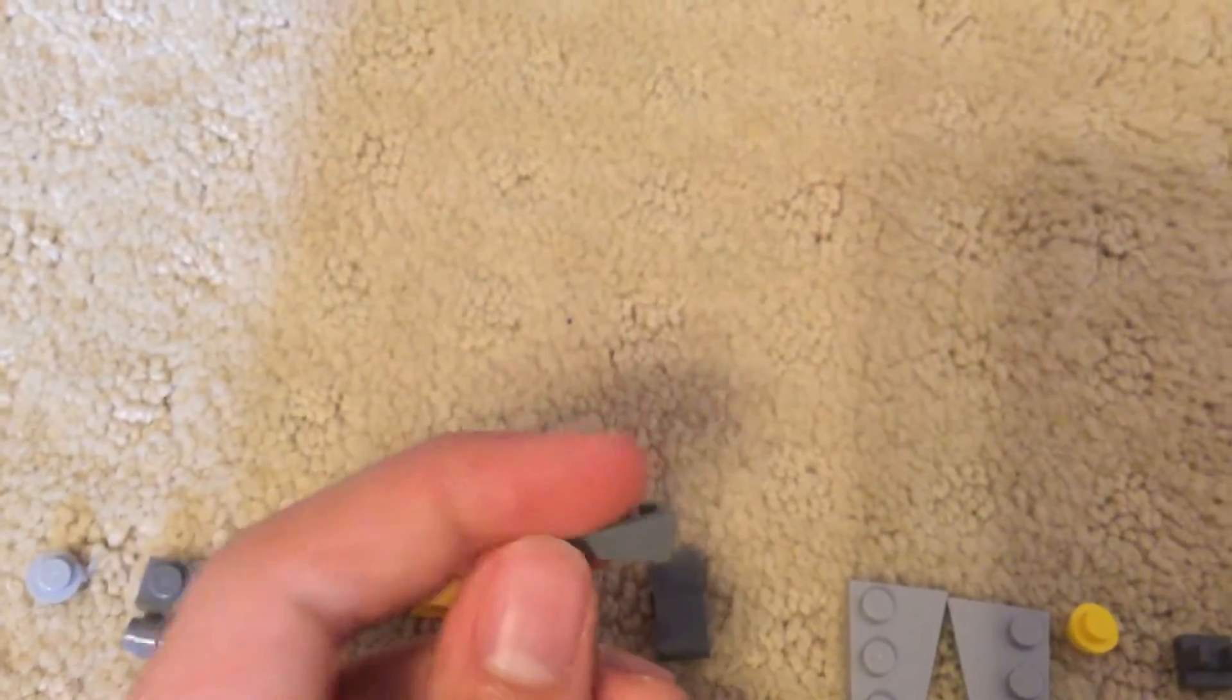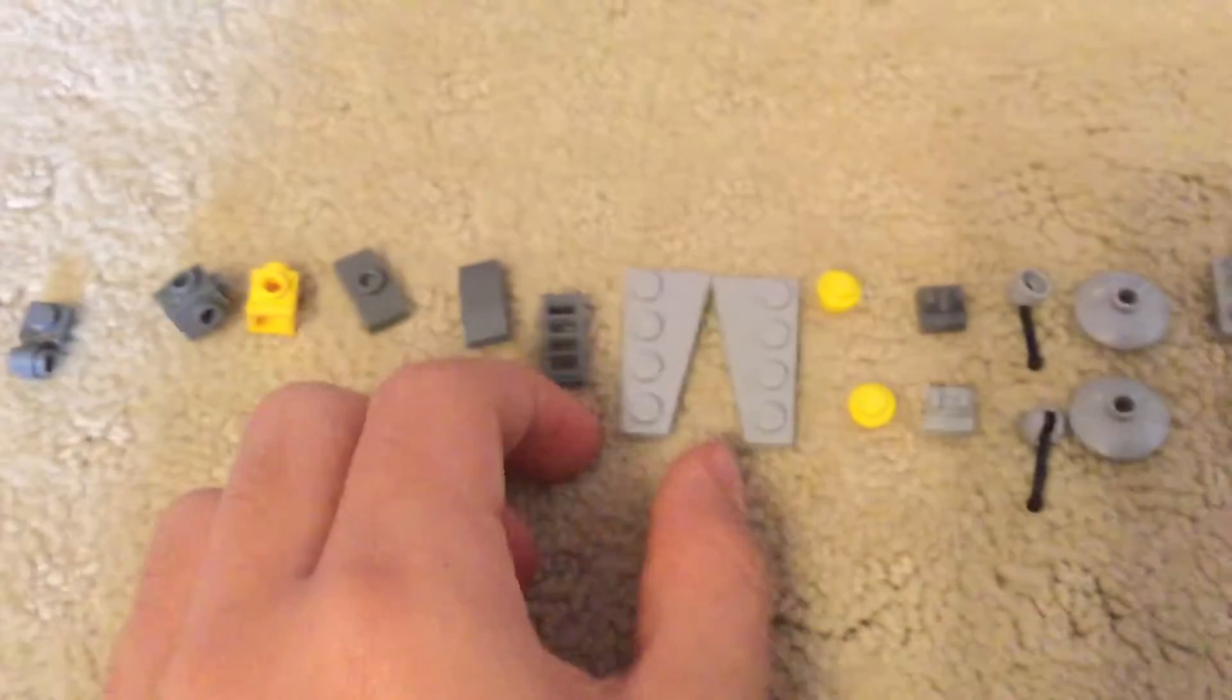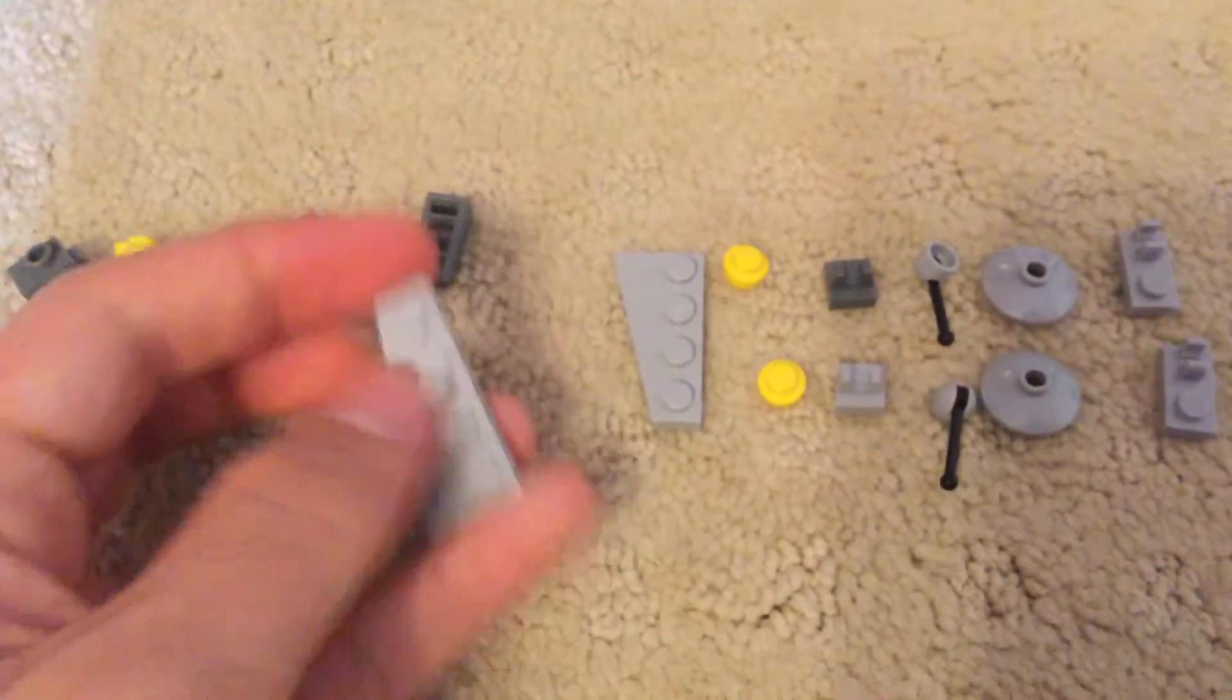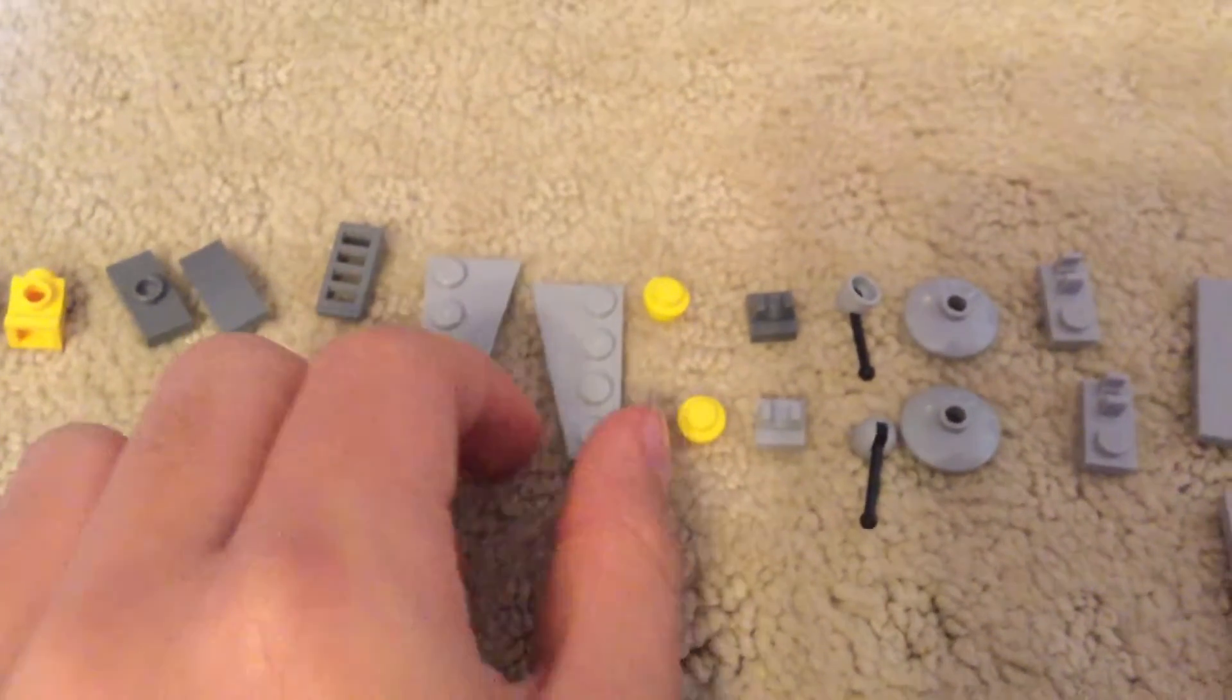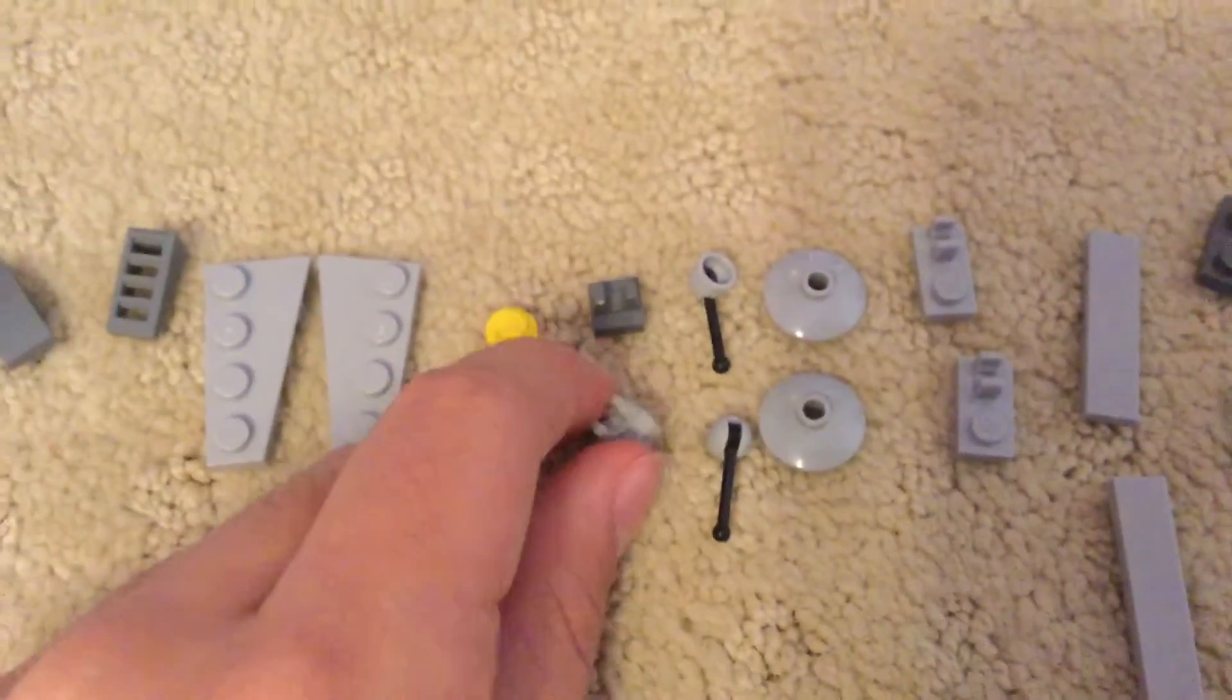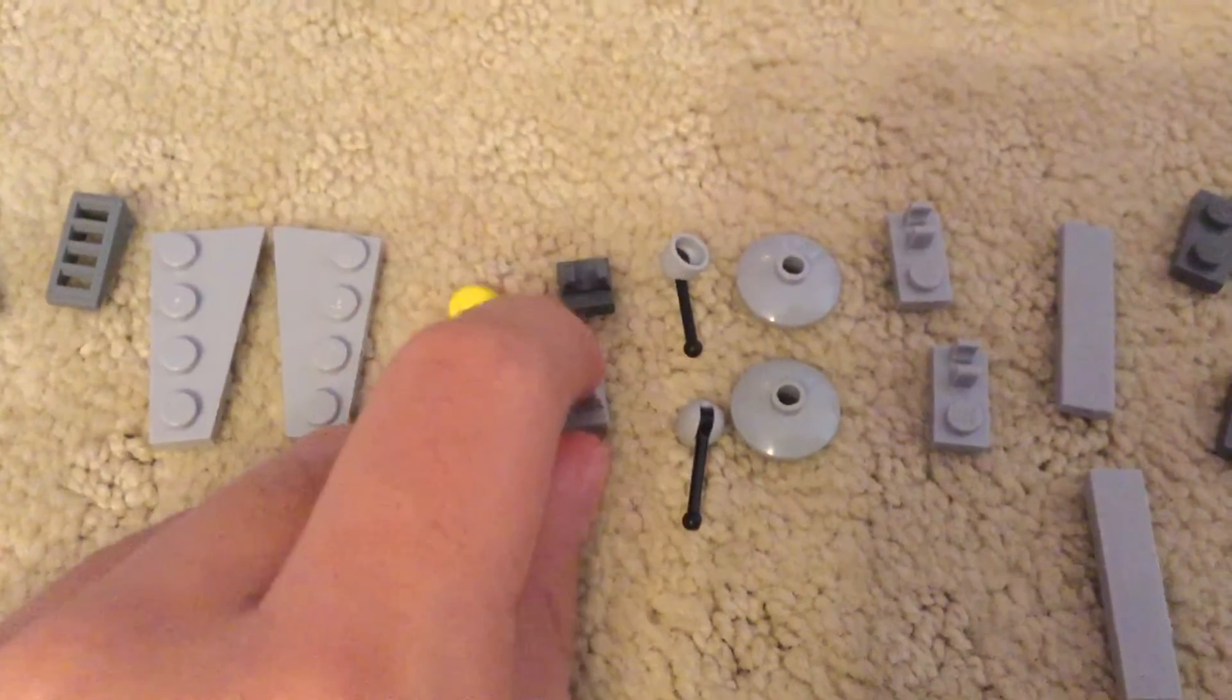One dark gray 1x2 slope with grill things in it. One light gray 1x4 slanted piece, and the opposite of that. Two yellow 1x1s. Two 1x1 clips, either light gray or dark gray.